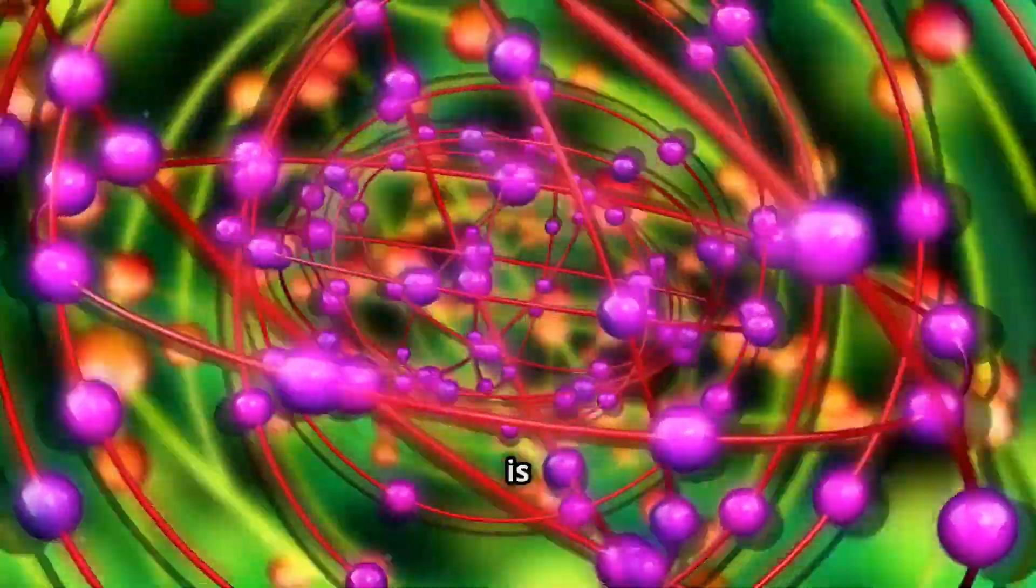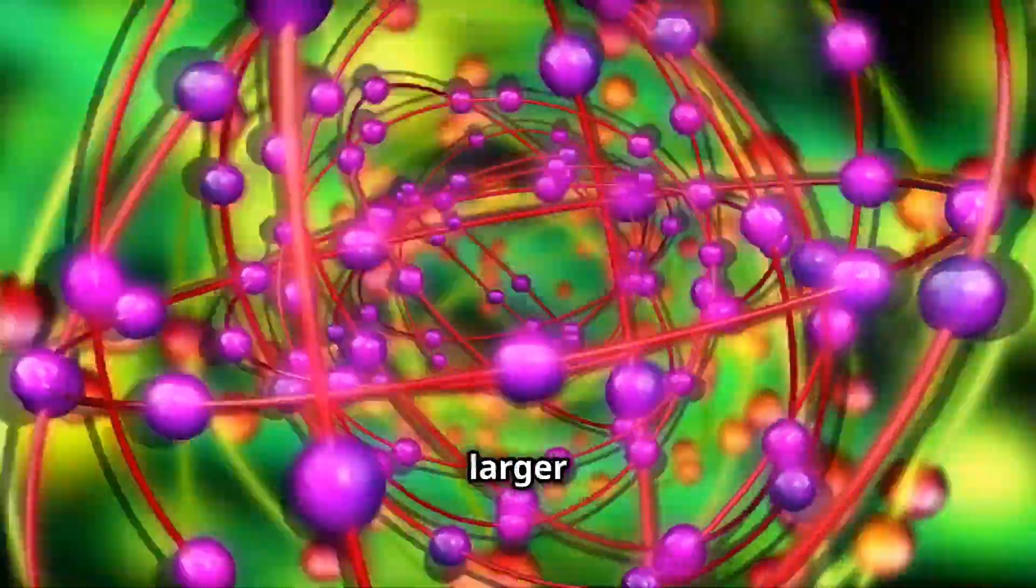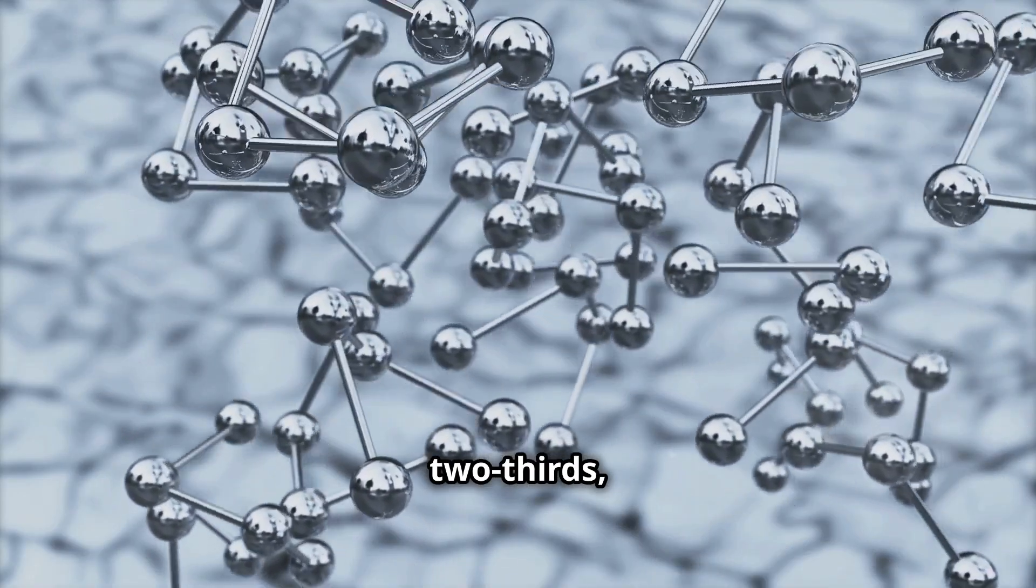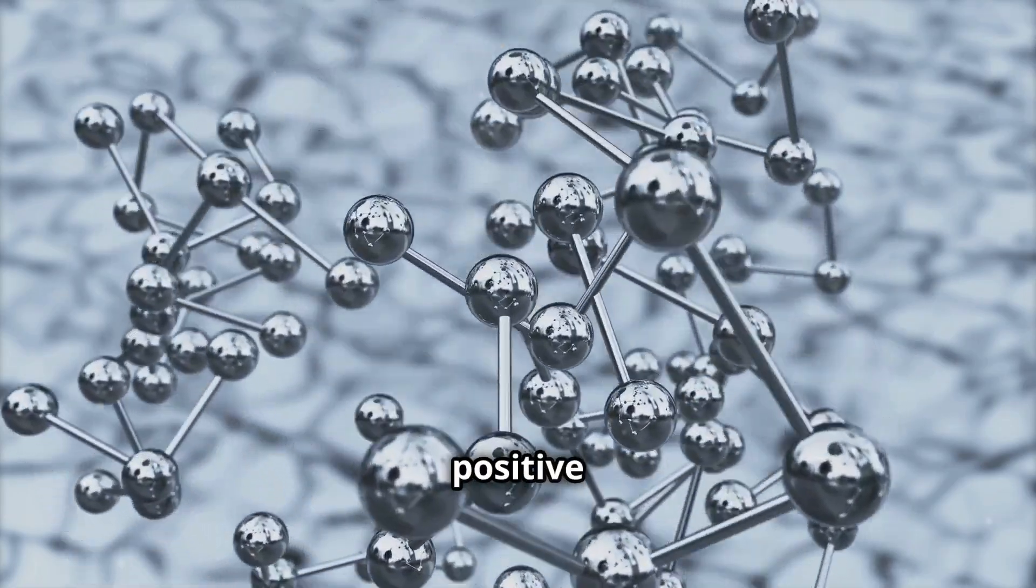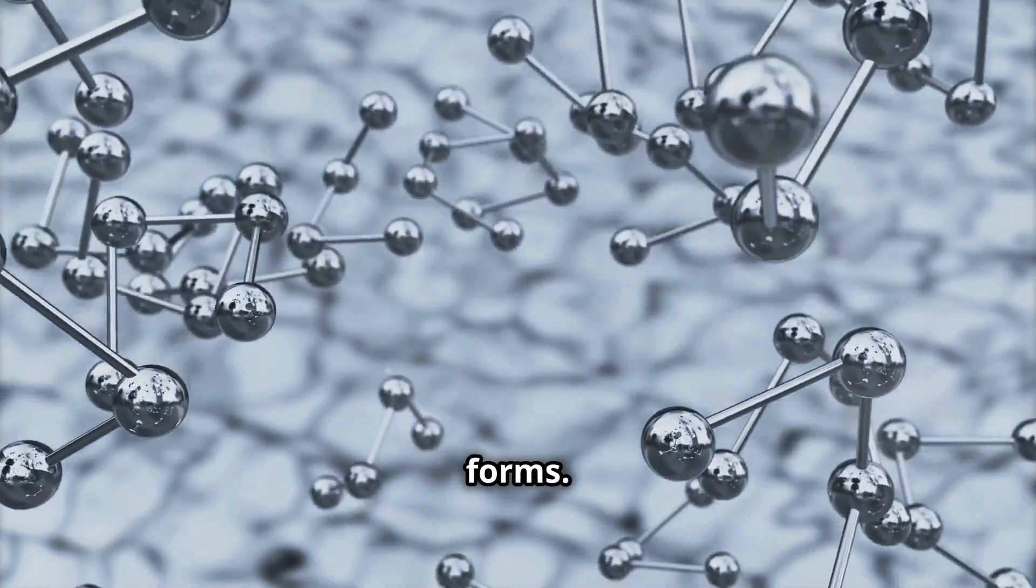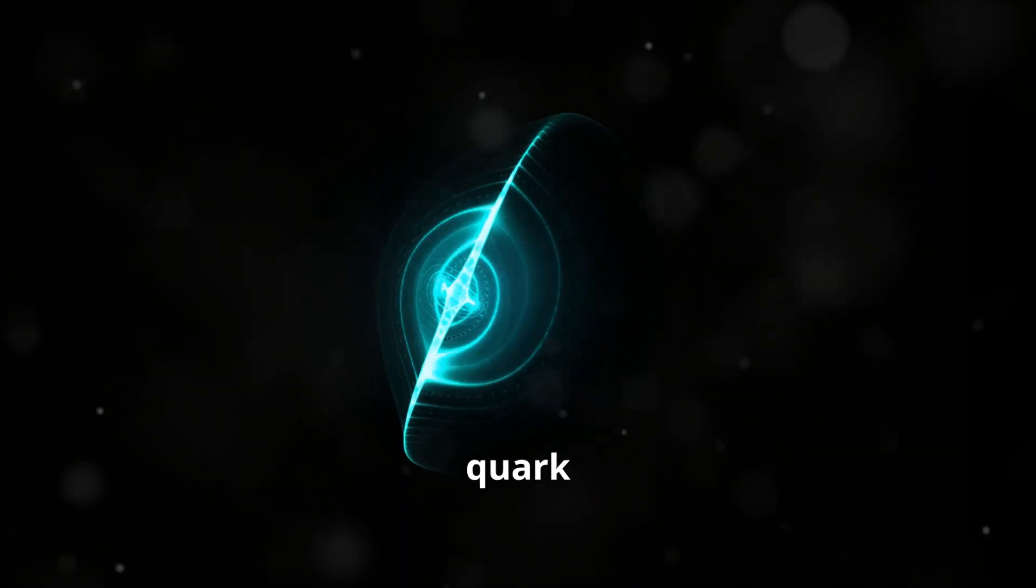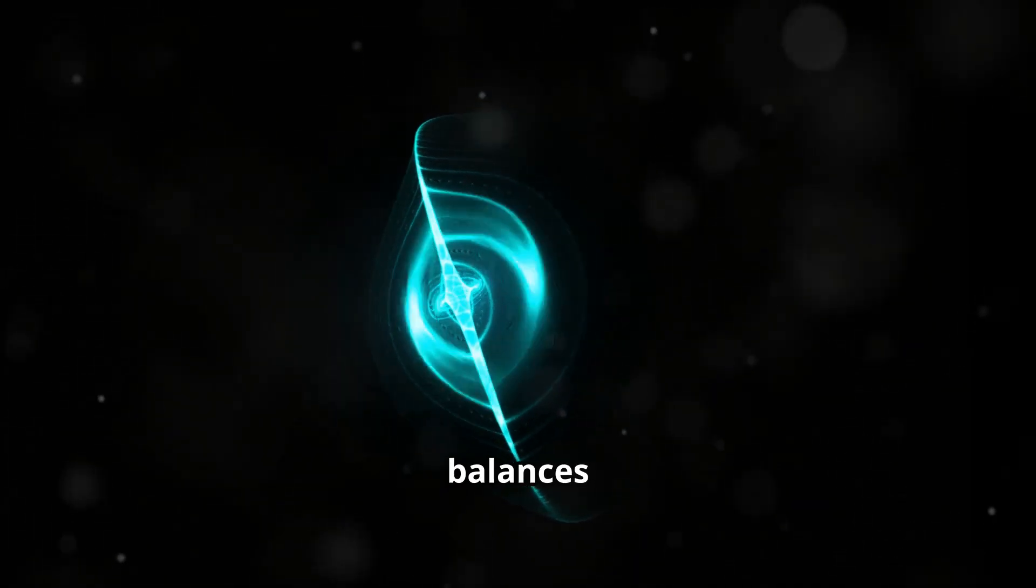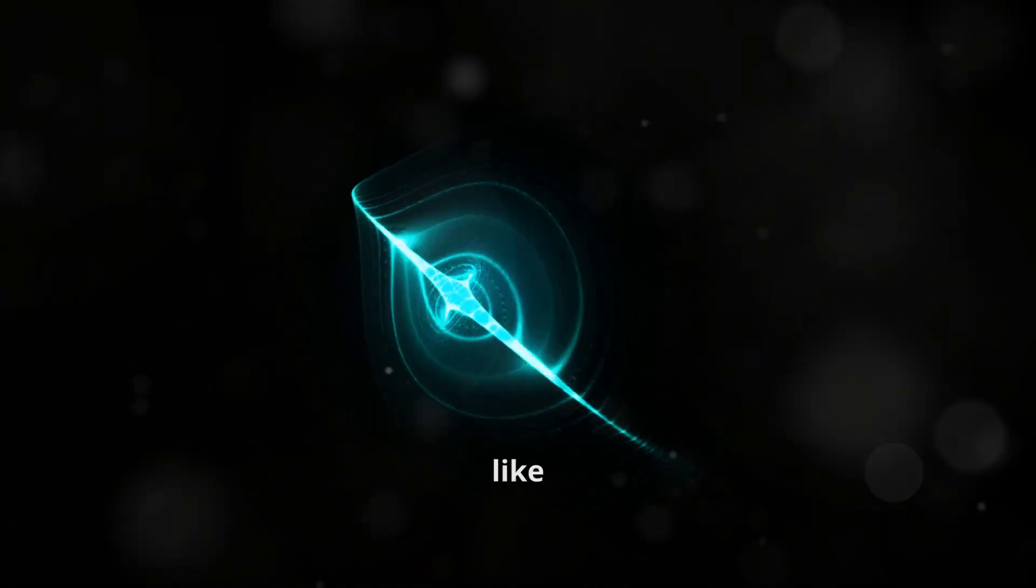This fractional charge is a key feature in the formation of larger particles. For example, the up quark has a charge of plus two-thirds, which means it contributes a positive charge to the particles it forms. While the down quark has a charge of minus one-third, this negative charge balances out the positive charges in particles like neutrons.